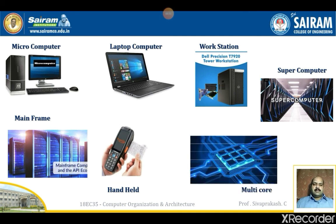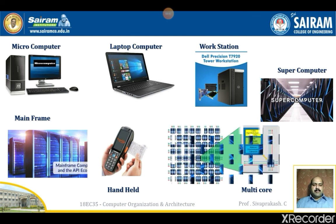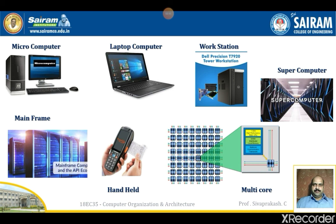The seventh one is the multi-core computer. Multi-core computers have multiple cores — a parallel computing platform where many cores are computing elements in a single chip. For example, Sony PlayStation, Core 2 Duo, i3, i5, i7, etc. are called multi-core computers. These are the seven types of computers.